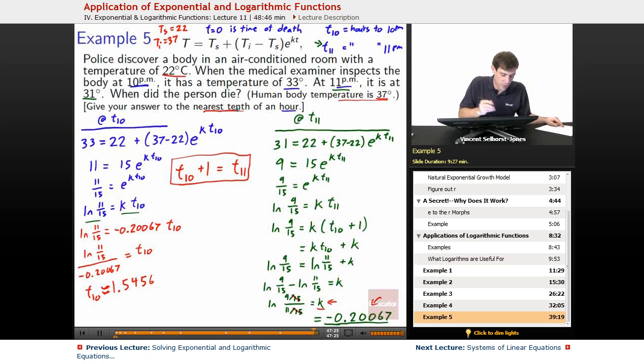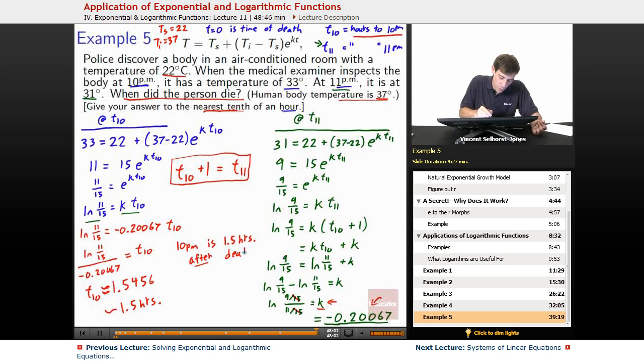However, they asked for the nearest tenth of an hour. So that winds up being about 1.5 hours. Now we want to know what time did the person die at? Well, if at T10, that's the hours to get to 10 p.m. from time of death. So if it's 1.5 hours to get to T10, then that means death occurs 1.5 hours before T10. So we know that 10 p.m. is 1.5 hours after death. So if we go back 1.5 hours from 10 p.m., we get 8:30 p.m. as time of death.